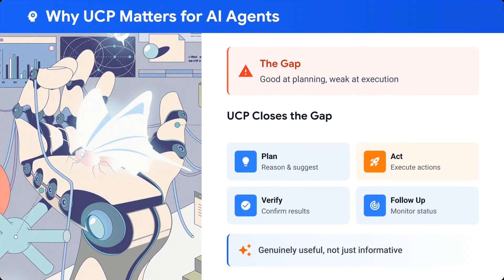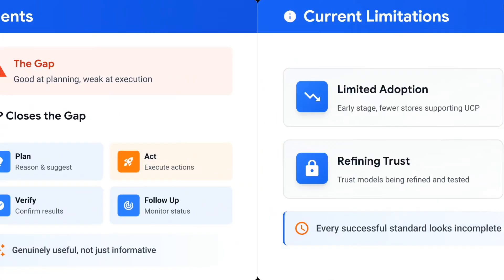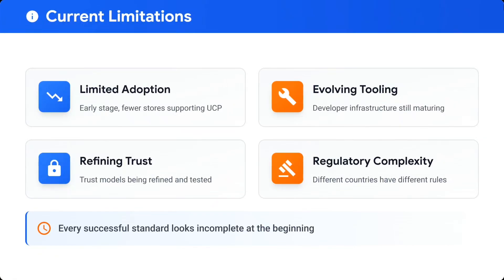Why UCP matters for AI agents: UCP closes the gap between plan, act, verify, and follow-up — making AI agents generally usable, not just informative. Current limitations: limited adoption since it has just started, trust models are still being refined and tested, developer infrastructure is still maturing, and there is regulatory complexity.